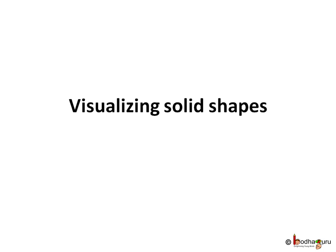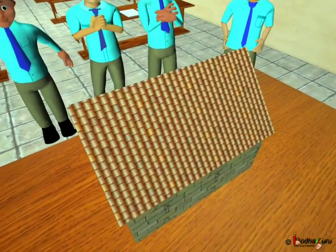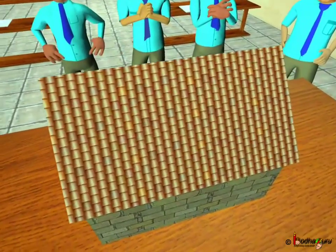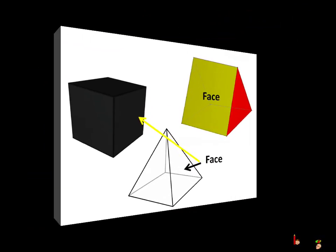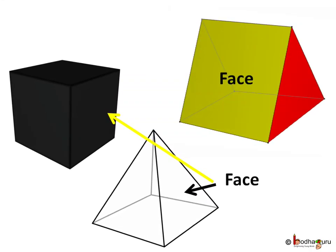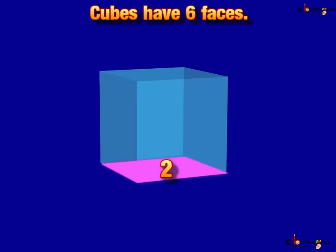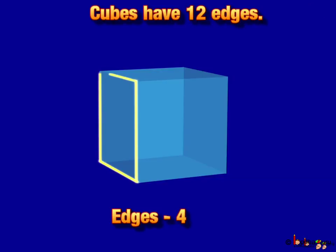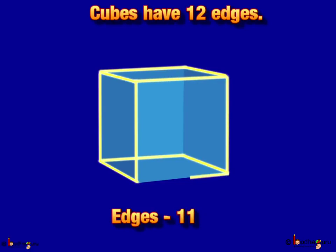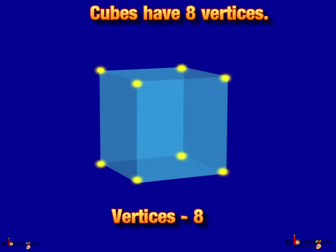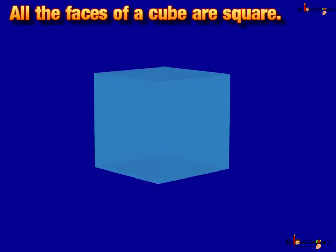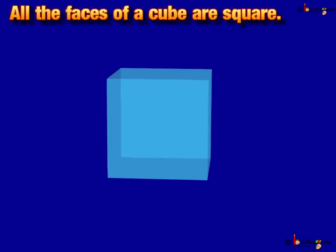Visualizing Solid Shapes. We now know a lot about solid shapes and different angles of viewing. Cube, prism, pyramid, etc. are made up of polygonal regions which are called faces. These faces meet at edges, and edges meet at a point. Such solids are called polyhedra.